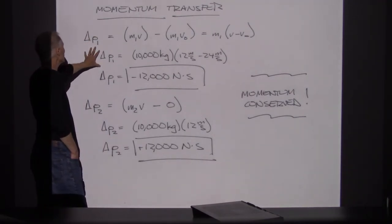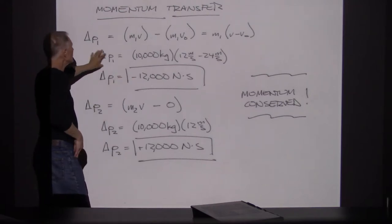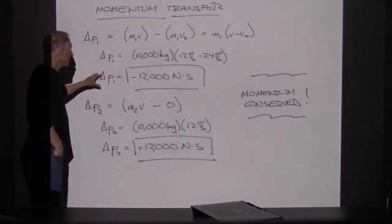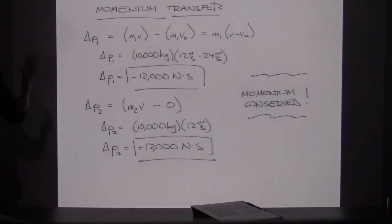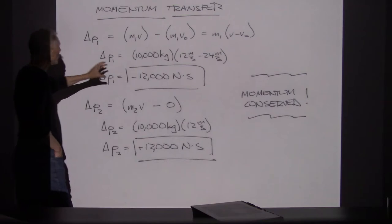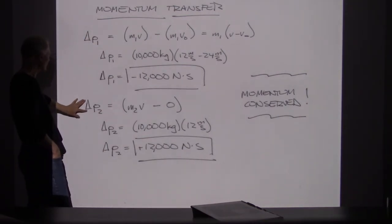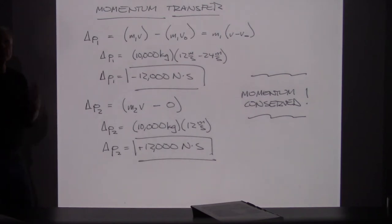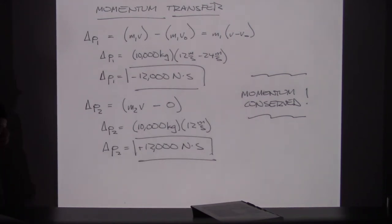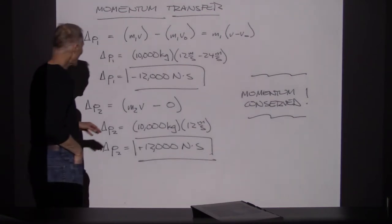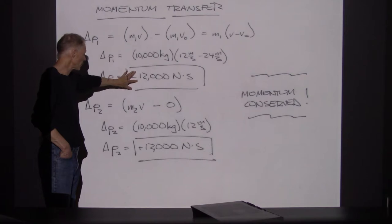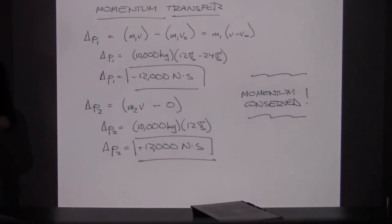Object 1 lost minus 12,000 newton seconds of momentum. Where did that momentum go? Object 2, if we calculate its delta P — final minus initial — railroad car 2 didn't start with any momentum at all, but after the collision it had momentum of M times V, which works out to be 12,000 units. During the collision, object 1 gave up 12,000 units of momentum and object 2 picked up 12,000 units. Momentum was conserved.